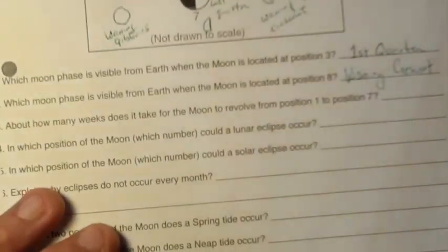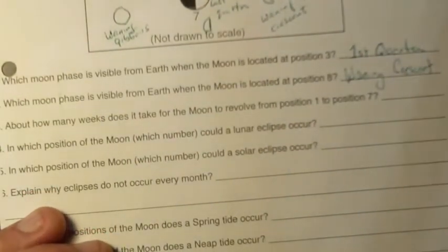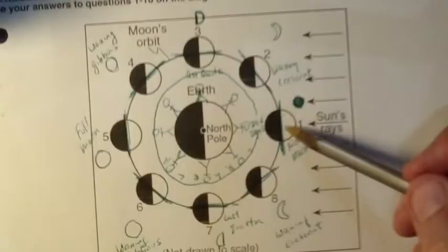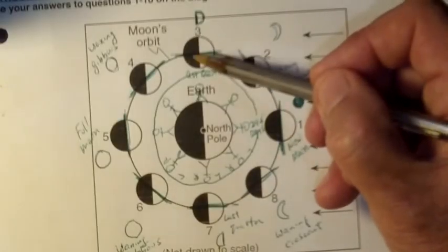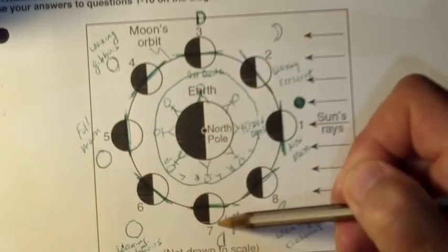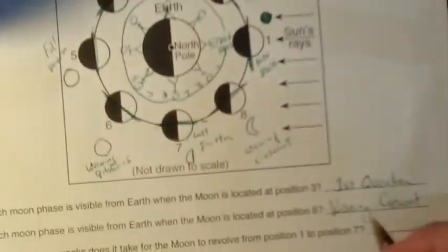Number three, about how many weeks does it take for the moon to revolve from position one to position seven? So in general, one week to get here, one week to get here, one week to get here, gives us a total of three weeks.